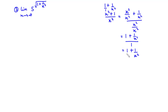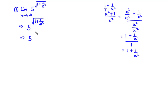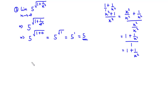So, substituting infinity directly into this limit, we have 5 raised to the power of √(1 + 1/∞²). Since 1/∞² = 0, this becomes 5 to the power of √1. The square root of 1 is 1, and 5¹ = 5. Therefore, the limit of this function as x approaches infinity is equal to 5.